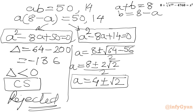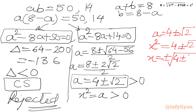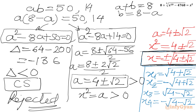Both values 4 plus root 2 and 4 minus root 2 are positive, which is consistent with our substitution x squared equals a requiring a to be positive. So x squared equals 4 plus or minus square root of 2, giving four real solutions x1, x2, x3, x4 as our required real solutions.